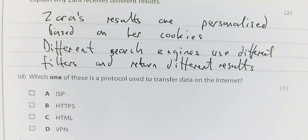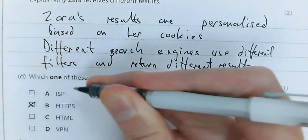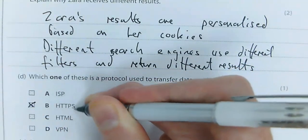4D: This is all about protocols. Protocols are the rules of data communication on the internet, and the only correct answer here is B, HTTPS, because the rest are not protocols.